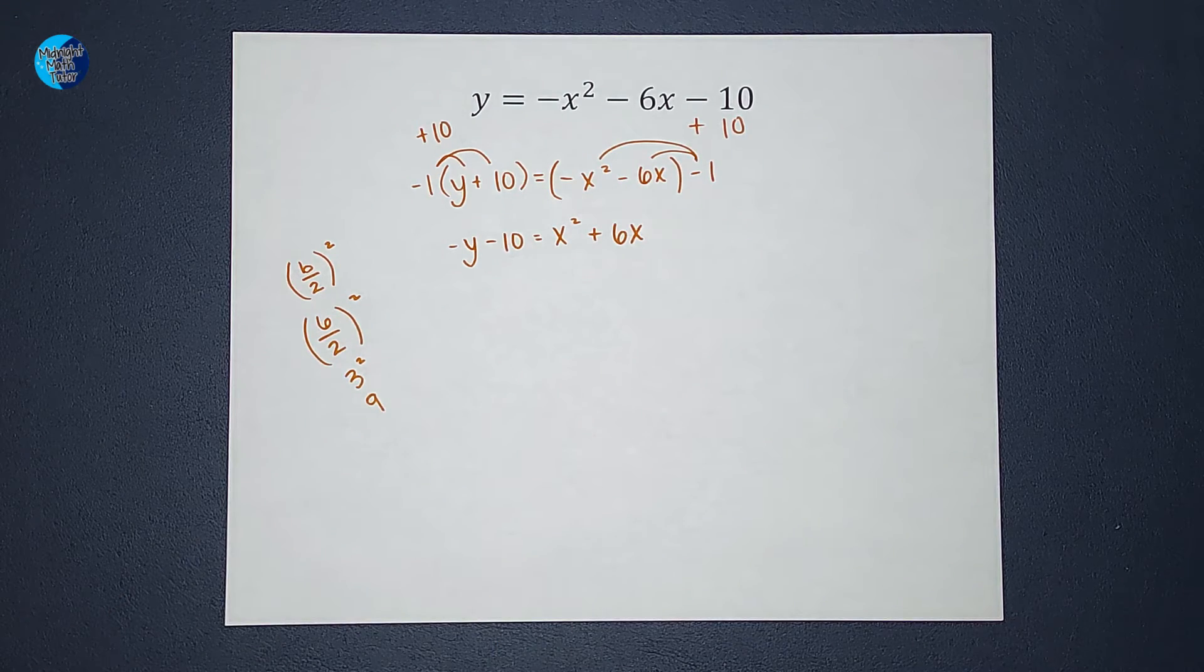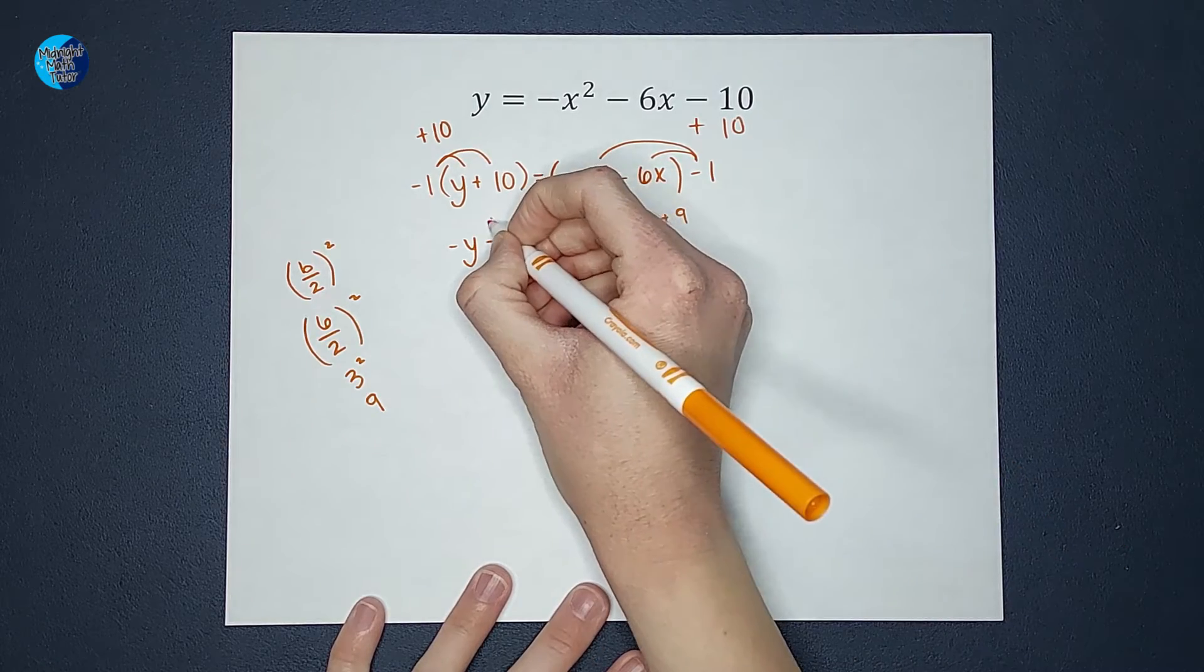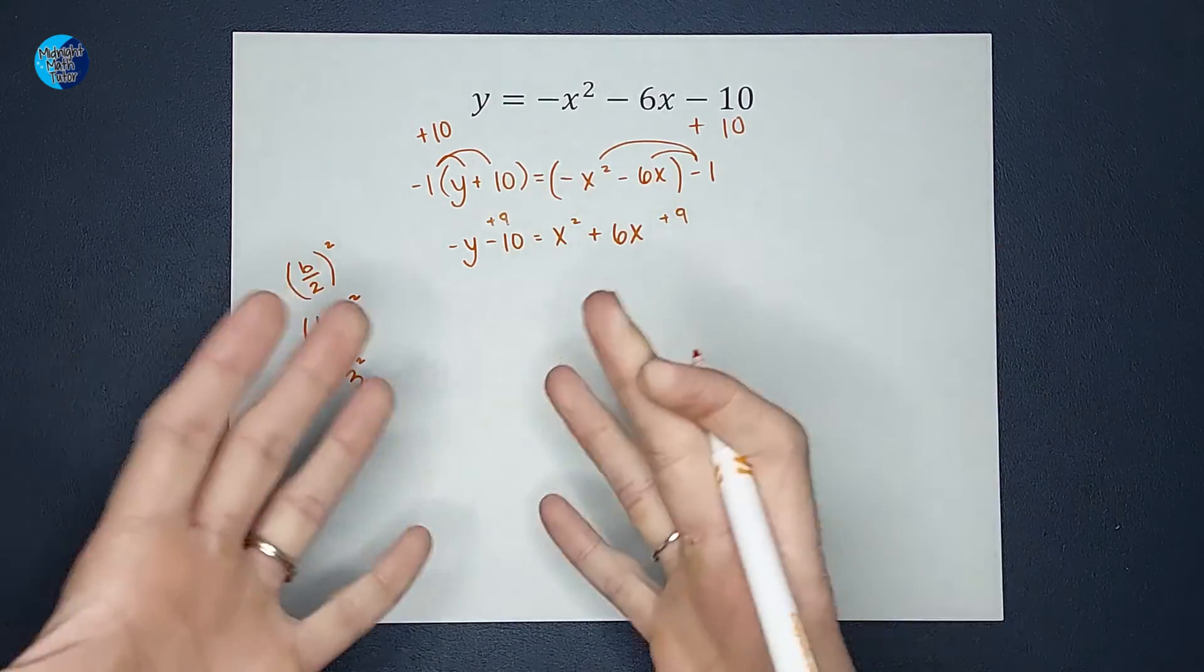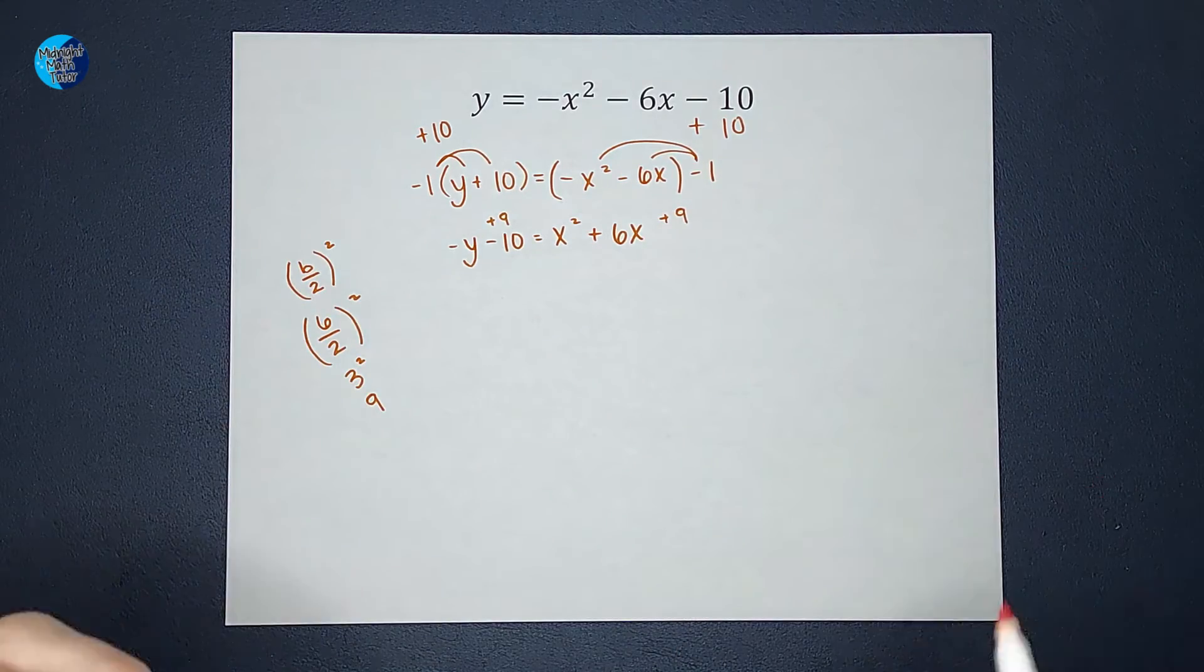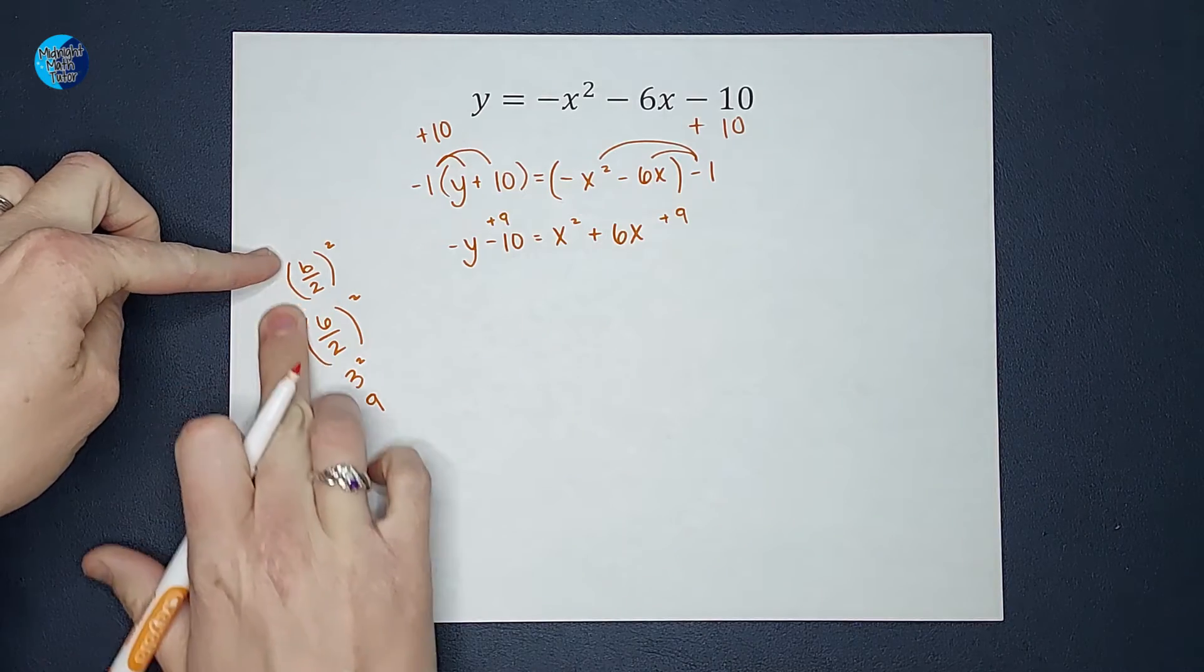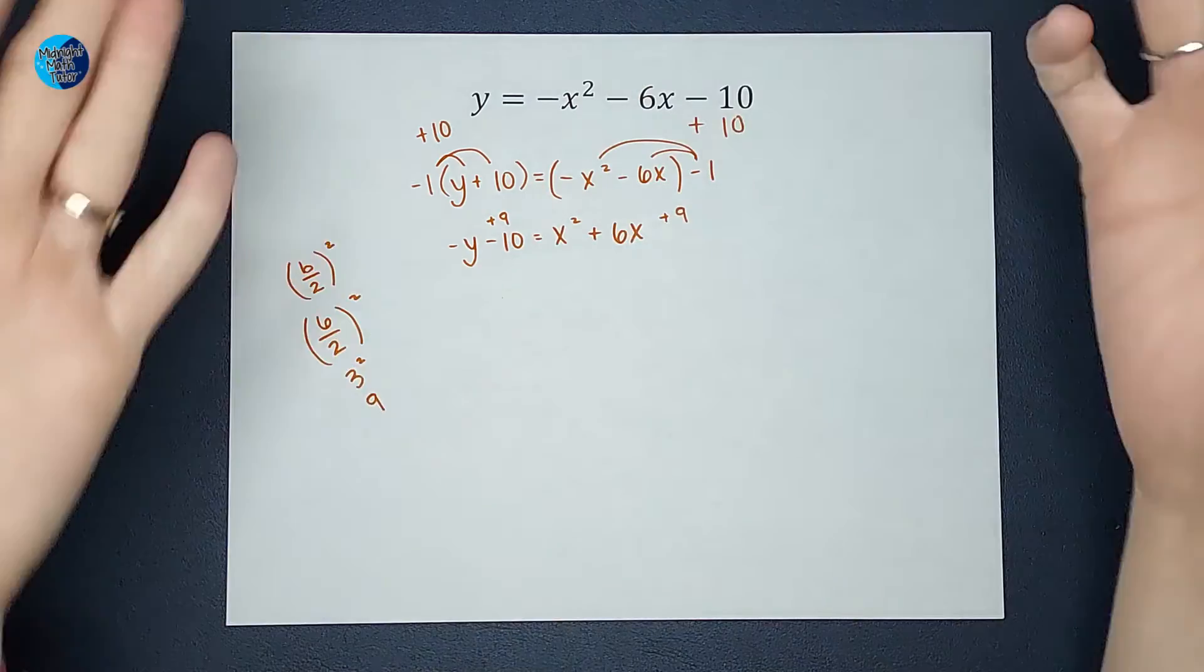So I'm going to add 9 to both sides of this equation. I can add whatever number I want to both sides, right? Or subtract, or whatever. I'm trying to pick a number that will help me. And this b divided by 2 squared thing gave me a number that I believe will help me get to my end goal.